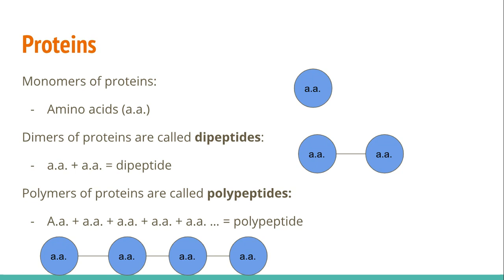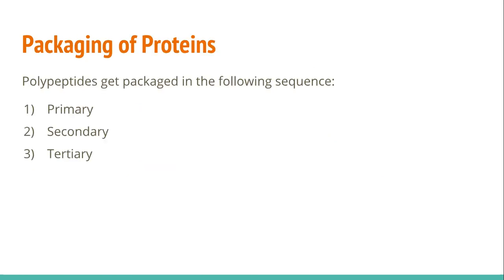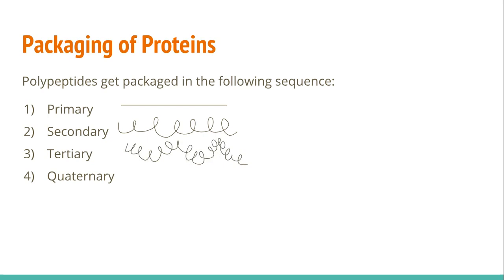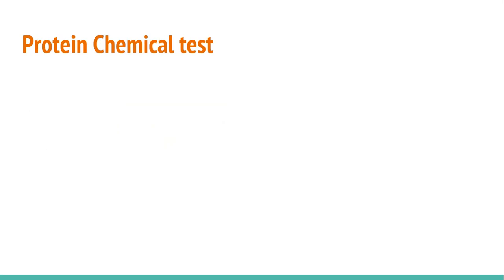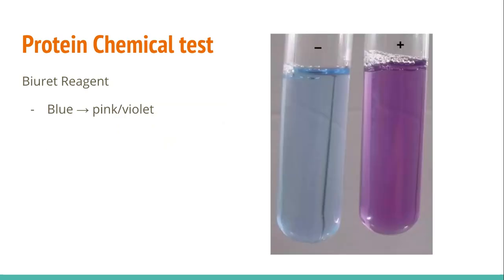Leave some space in the polypeptide section because we'll also talk about how proteins are packaged. You may remember from Science 10 the Golgi apparatus, whose job is to package proteins. It starts with a polypeptide chain and twists it into a secondary formation. Sometimes they are left like this, and other times they're turned into the tertiary form, and lastly packaged into the quaternary form. You don't need to know these 100%, but you do need to know that polypeptides are packaged differently to do different jobs. When we want to test for proteins, we use the biuret reagent — a blue liquid — and if proteins are present, it turns pink-violet.